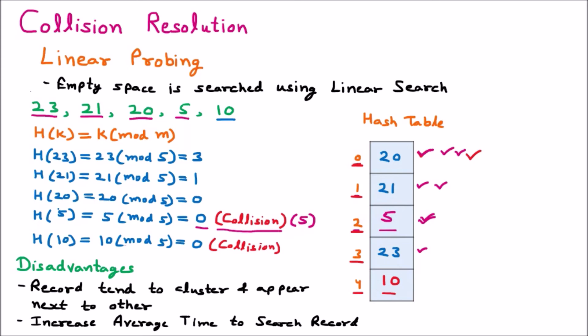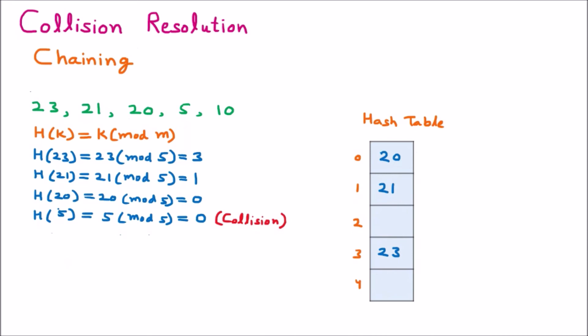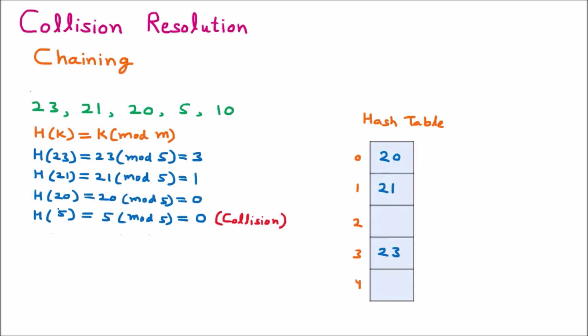Now we discuss the second collision resolution technique: chaining. In chaining, records with the same hash address are linked together in the form of a linked list. Records having the same hash value are chained together, which is why it is called chaining — because a chain is created.